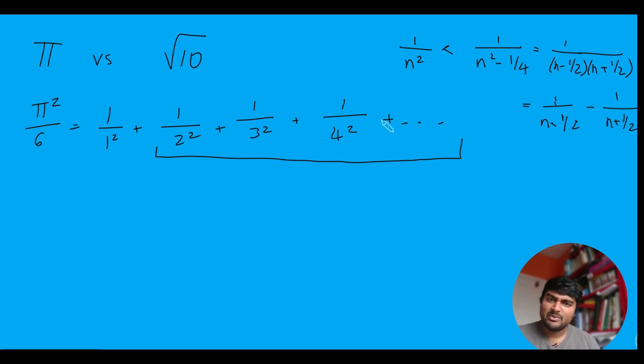Amazing. And now we're just going to apply that over here with this kind of thing. And we'll say that this is going to be less than, we'll keep the first term the same, so 1 over 1 squared is the same. But 1 over 2 squared is going to be less than this thing here, which is 1 over 2 minus a half, which is 3 over 2, minus 1 over 5 over 2. So that comes from plugging in 2 into this expression here.